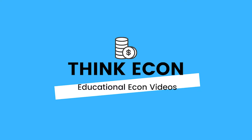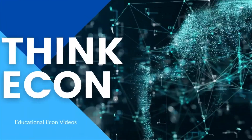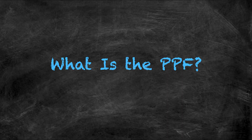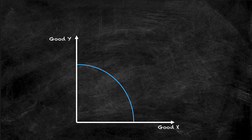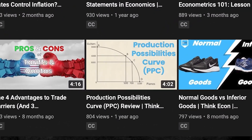With that said, let's get into it. The production possibilities curve, also known as the production possibilities frontier or PPF for short, is simply a graph with two goods, one on each axis. This graph shows all of the different combinations of these two goods that an economy can make when using all of its factors of production efficiently. If you need a more in-depth refresher on what the PPF is, feel free to check out our other videos on the channel where we go more into depth on the topic.